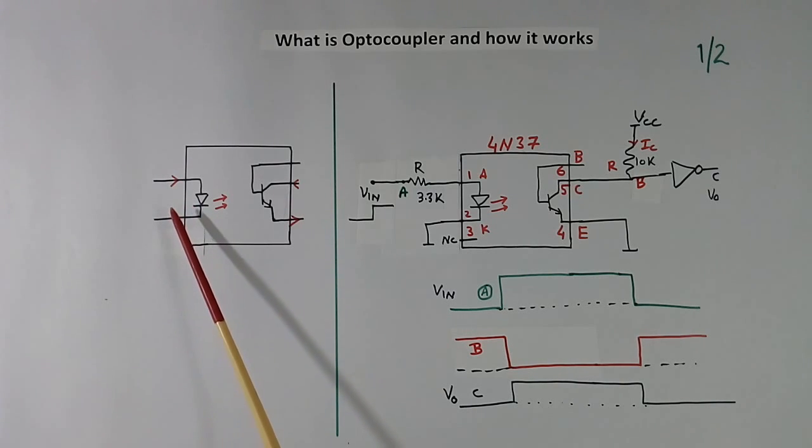Optocoupler is an electronic component which transfers electronic or electrical signal from one part to other part using light, without any electrical connection. There is no electrical connection from this side to this side.